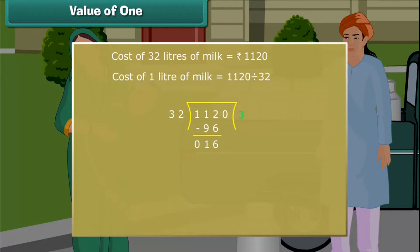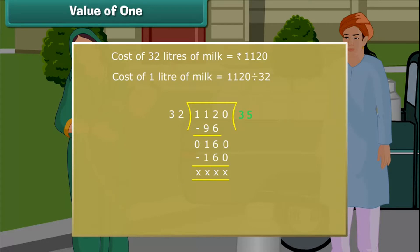Bring 0 down. The new number formed is 160. It holds 5 times 32, that is 160 exactly. Write 5 to the right of 3, and 160 beneath 160. Subtract; as the difference is 0, mark the end of the division operation. Therefore, the cost of 1 liter of milk is 35 rupees.